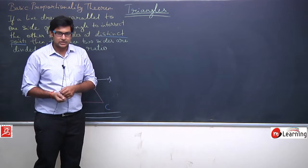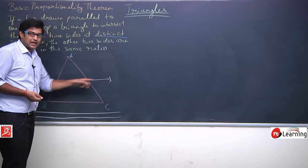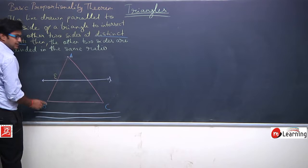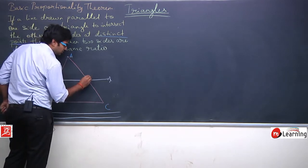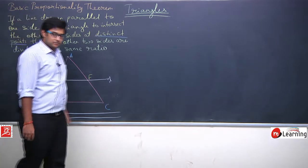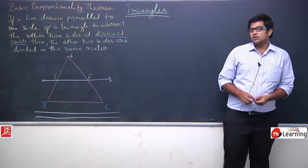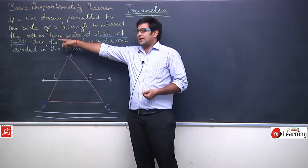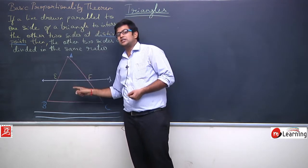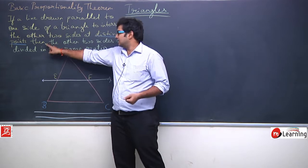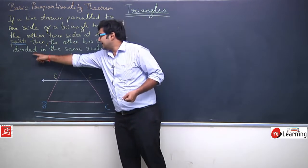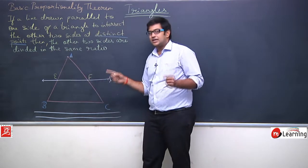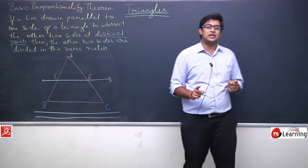So I have chosen line L. Let us say line L cuts AB at point E and AC at point F. Now the theorem says: the line we have drawn, which cuts the two sides at distinct points, divides those sides — AB and AC — not in different ratios but in the same ratio.